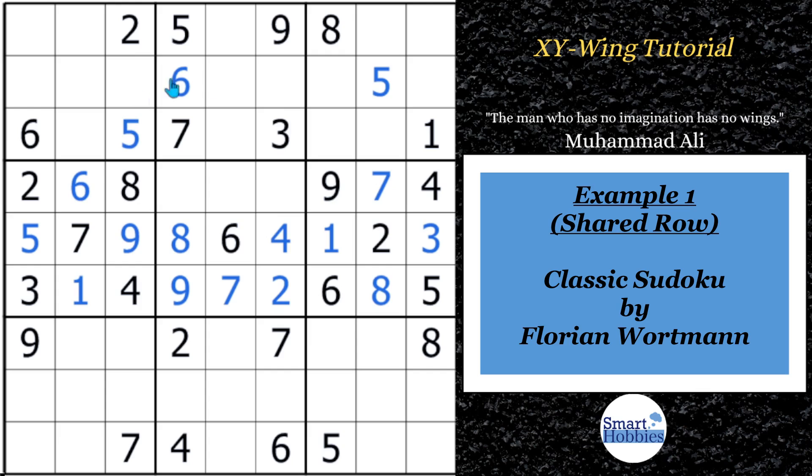For our first example, this is a classic Sudoku by Florian Wirtman. I got to the point where I filled in most of the cells, and I found a Sudoku XY-Wing. Let's say you're looking up here, and you're trying to solve cells, and you notice that this is just a 1 or an 8, because you've got the 2, 3, 4, 5, 6, 7, 9 all feeding into this cell. Well, if you start filling out some of the bi-valued cells, you will come across these cells here. This could only be a 1 or a 4, this could only be a 3 or a 4, and this could only be a 1 or a 3.